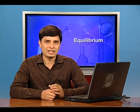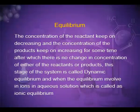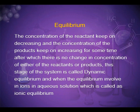When the reactants in a closed vessel at a particular temperature react to give products, the concentration of the reactants keeps on decreasing and the concentration of the products keeps on increasing for some time, after which there is no change in concentration of either reactants or products. This stage is called dynamic equilibrium. When the equilibrium involves ions in aqueous solution, it is called ionic equilibrium.